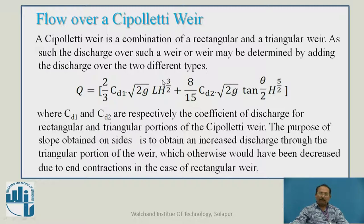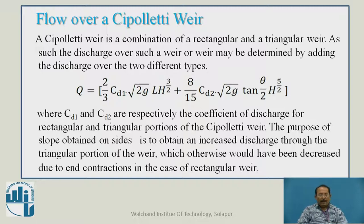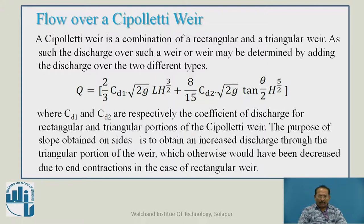As stated, it is a combination of rectangular as well as triangular. The discharge of rectangular and triangular is combined. The discharge over a rectangular weir is (2/3) CD √(2G) L H^(3/2), where CD is the coefficient of discharge, L is the length of the channel, and H is the head. For the triangular weir it is (8/15) CD √(2G) tan(θ/2) H^(5/2). Here length is not present — only the angle is there, so tan(θ/2) H^(5/2).